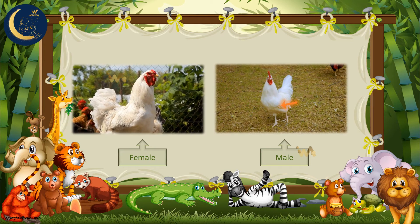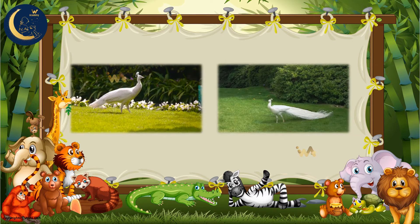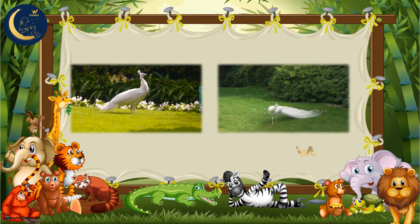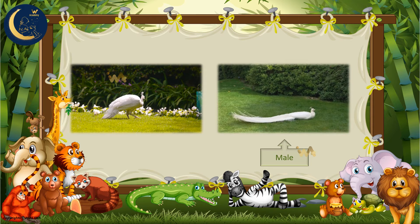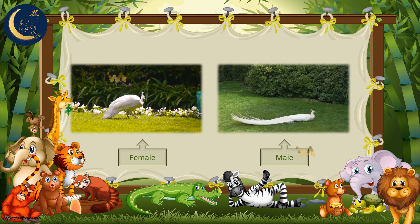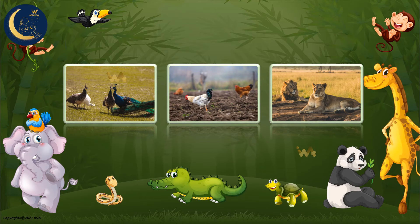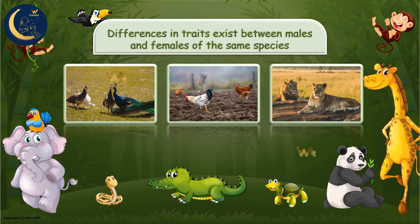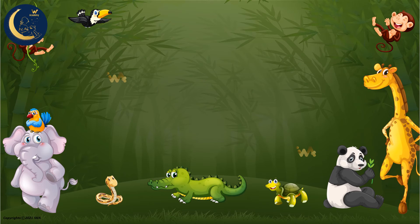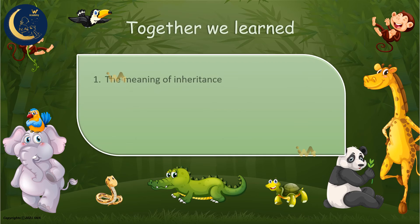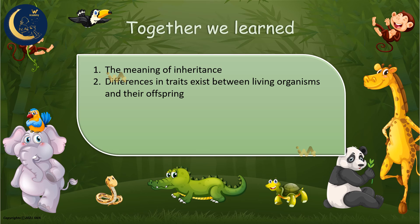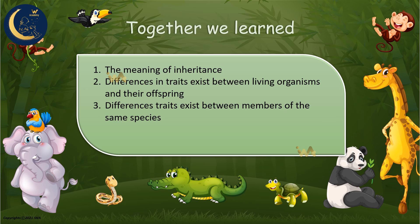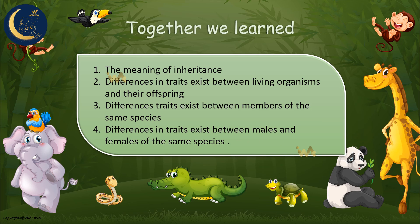The feathers also look different from each other. And likewise, the peacock — the male peacock is different from the female peacock. The male has a long tail, while the female does not. So we can conclude, my friends, that differences in traits exist between males and females of the same species. Together we learned the meaning of inheritance, and that there are differences in traits between living organisms and their offspring. There are also differences in traits between members of the same species, and between males and females of the same species.